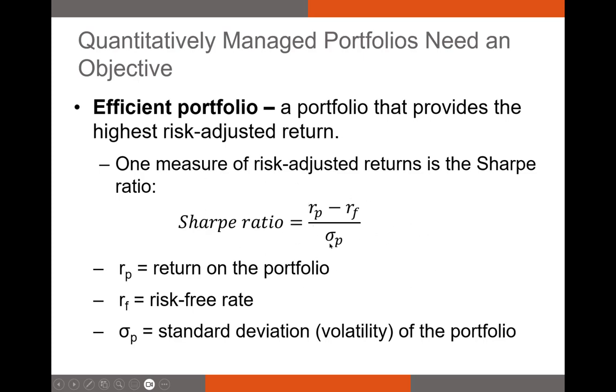Remember our Sharpe ratio is nothing more than the return on an asset minus a risk-free rate divided by the volatility or risk of the asset. So in a portfolio context, we're just taking the portfolio's return, subtracting the risk-free rate, so in this case it's probably going to be like a 10-year T note, and then divide by the standard deviation of the portfolio. Easy enough.